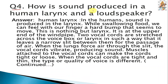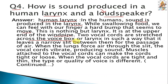Question number four. How is sound produced in a human larynx and a loudspeaker? In humans, sound is produced in the larynx. While swallowing food, we can feel with our finger a hard bump that seems to move — this is the larynx. It is the upper end of the windpipe. Two vocal cords are stretched across the voice box or larynx leaving a narrow slit between them for passage of air. When the lungs force air through the slit, the vocal cords vibrate, producing sound. Muscles attached to the vocal cords can make the cords tight or loose; when vocal cords are tight and thin, the type or quality of the voice is different.